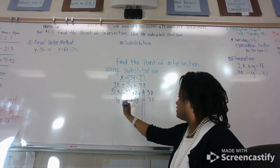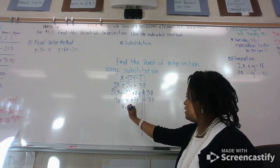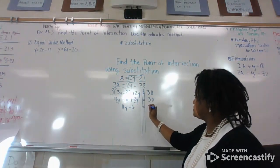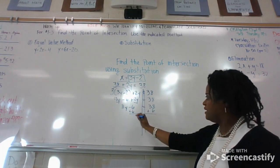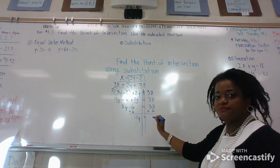Combine like terms here and here. Eleven y minus six equals 38. Add six.